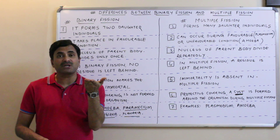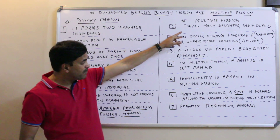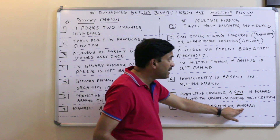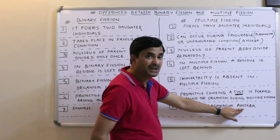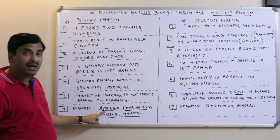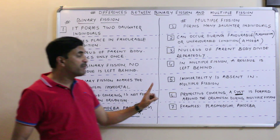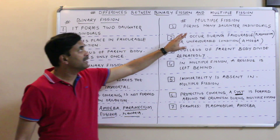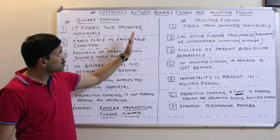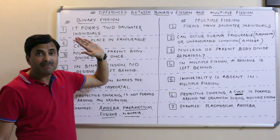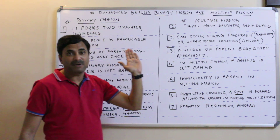In multiple fission, the main example is plasmodium. Amoeba is also a good example of multiple fission — but don't be confused: in favorable conditions, amoeba undergoes binary fission, while in unfavorable conditions, amoeba undergoes multiple fission. These were the seven important differences between binary fission and multiple fission.